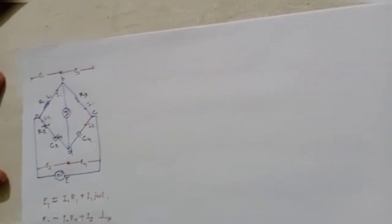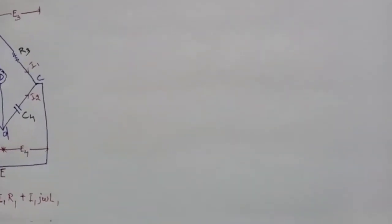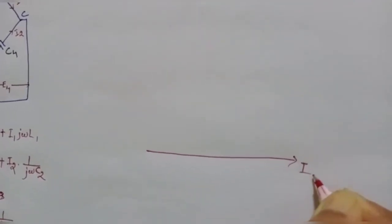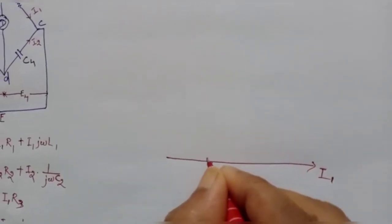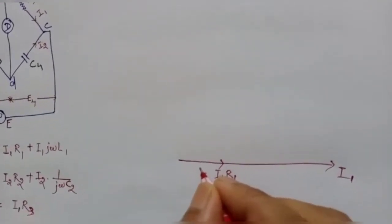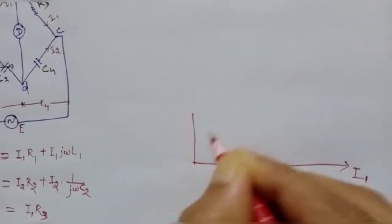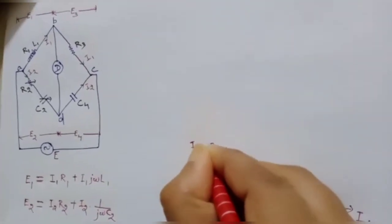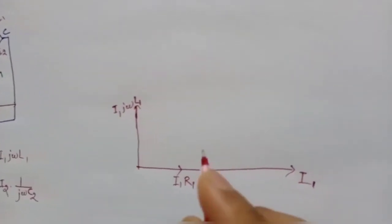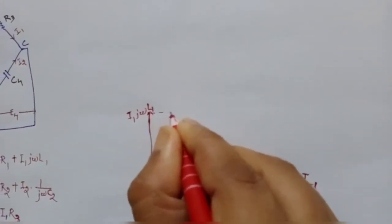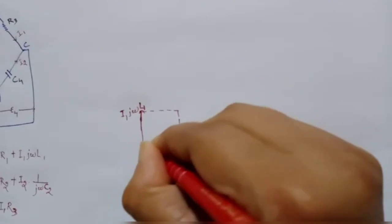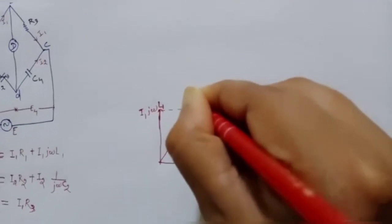To draw the phasor diagram, we take one quantity as the reference. Here we take I1 as the reference. The resistive voltage drop I1·R1 is in phase with I1. The inductive voltage drop I1·j·ω·L1 leads I1 by 90 degrees. The phasor sum of I1·R1 and I1·j·ω·L1 gives us the phasor E1.